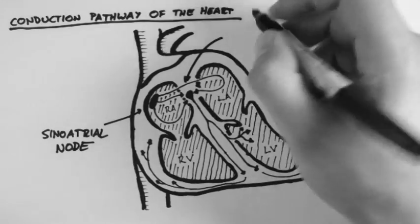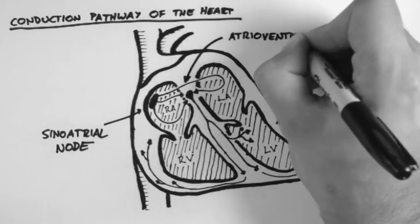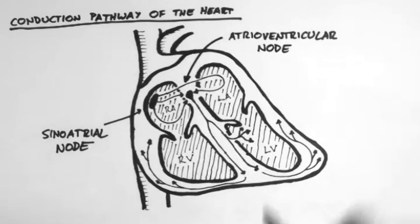Then from the SA node the signal runs all over both atria and ends up in this atrioventricular node also known as the AV node.